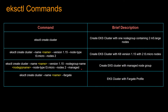Another commonly used command adds '--nodegroup-name' and '--managed', which means EKS manages your worker nodes as part of a managed node group. The last command used a lot is 'eksctl create cluster --name' with '--fargate', which not only spins up the EKS cluster control plane but also creates a Fargate profile that you can use right away to deploy your pods on Fargate.